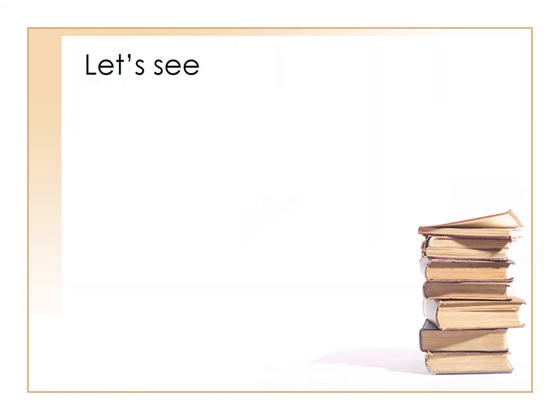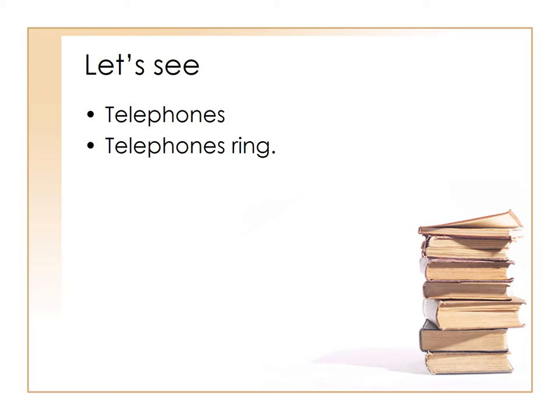If you look at the word 'telephones,' it's just a word. It's not a sentence — it does not give you a full meaning. 'Telephones ring' gives you a better idea; it's a full sentence that tells us about the function telephones have. If you look at the word 'John,' John is just a name. When you say 'John likes apples,' we have a complete idea: John as a subject, likes as a verb, and apples as an object.